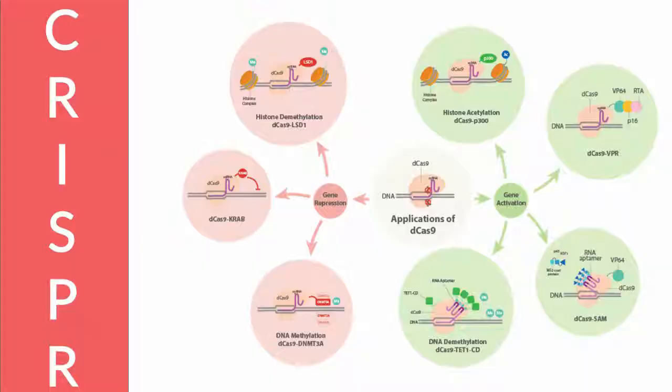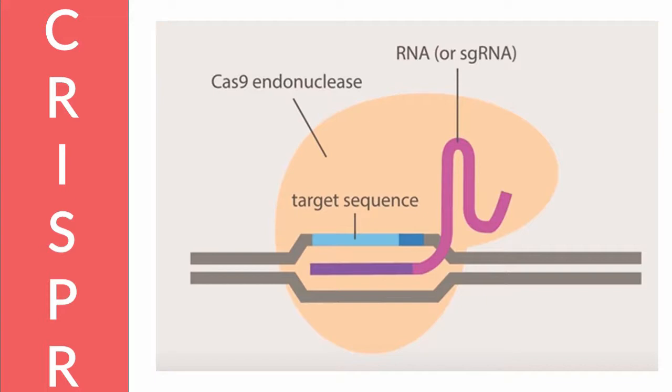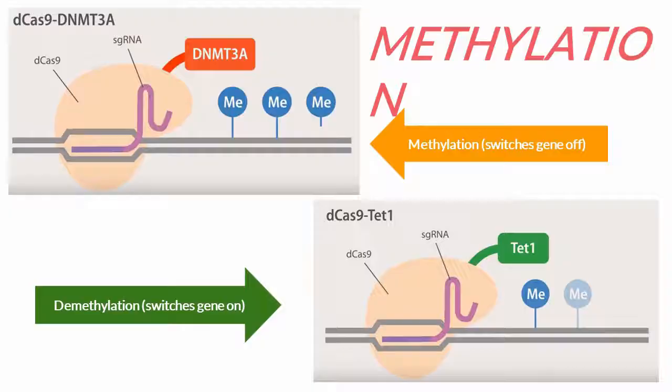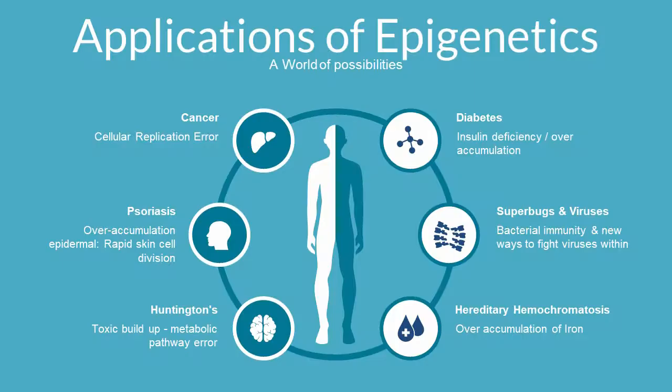So how can we deliver this epigenetic therapy? Here we have CRISPR, the revolutionary tool of our genetic age. CRISPR uses single-guide RNA as the driver, while an endonuclease — dCas9 — acts as the car to deliver transcriptional factors. Importantly, we're using dCas9, which is a deactivated form of the endonuclease that does not make incisions along the DNA, because that's not what we want. The beauty of CRISPR is that we can attach any enzyme we want to mediate acetylation or methylation.